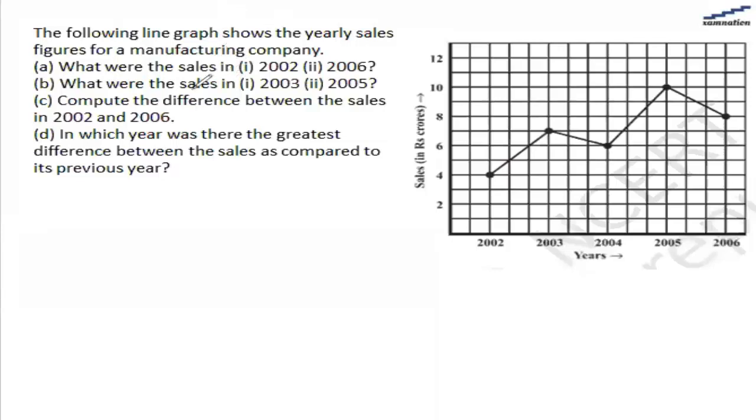In this question, we are given this line graph that shows the yearly sale figures for a manufacturing company. The y-axis represents the sales in crore rupees, and the horizontal axis shows the years starting from 2002 till 2006. We are asked some questions, so let's see.